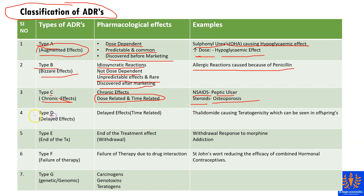Type D stands for delayed effects, which are time related. An example is thalidomide causing teratogenicity, which can be seen in offspring.